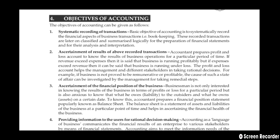The first objective is systematic recording of transactions. The basic objective of accounting is to systematically record the aspects of business transactions. You have to keep bookkeeping records, and this recording of transactions should later be classified and summarized logically for the preparation of final statements.